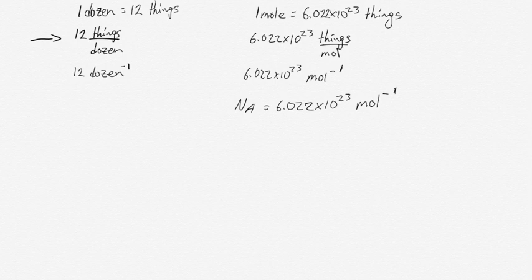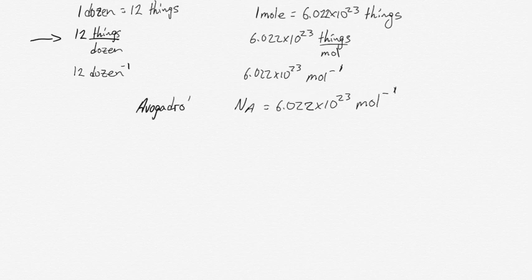A mole is very much the same kind of idea. One mole is 6.022 times 10 to the 23 things, or 6.022 times 10 to the 23 things per mole. And it has a special name - we call it Avogadro's number.